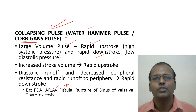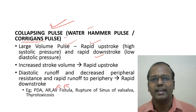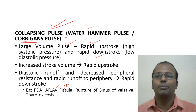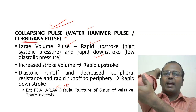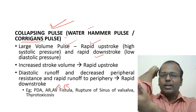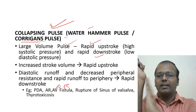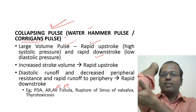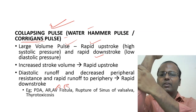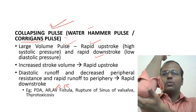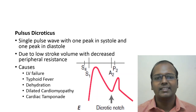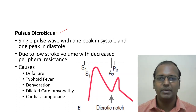To palpate the collapsing pulse: use both hands — one hand supports below the arm while the other palpates the radial pulse. Lift the arm above the head. Do not hold the arm tightly. The support should be below the arm; this is the correct method to elicit the collapsing pulse.